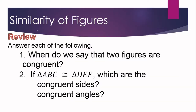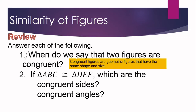Before we begin with similarity of figures, let us have a review on what congruent figures are. Question number 1: when do we say two figures are congruent? Congruent figures are geometric figures that have the same shape and size. They are congruent if they have the same shape and size, and also if all the corresponding sides and the corresponding angles are congruent.